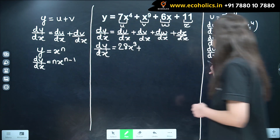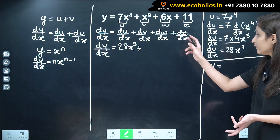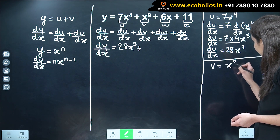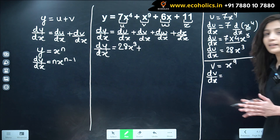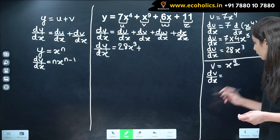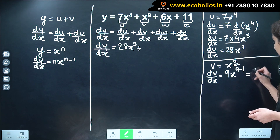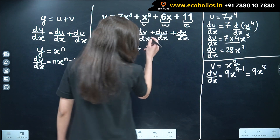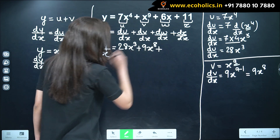Similarly, we'll calculate dv by dx. Our v is equal to x raised to 9. Using the power function rule with n equal to 9, dv by dx is equal to 9x raised to 9 minus 1, which is 9x raised to 8.